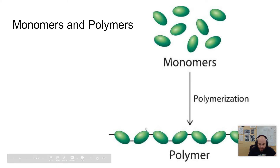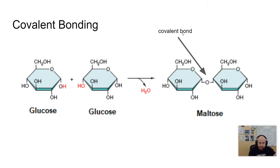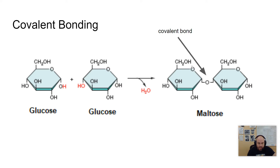A polymer can be just a handful of pieces, or it could be thousands of pieces — it's just when you have more than one. When these monomers interact, they form what is called a covalent bond. This is the strongest type of chemical bond we'll talk about. In this particular type of bond, there is a sharing of electrons. So when two glucose molecules combine, they share electrons and form this covalent bond, which is a very strong bond.